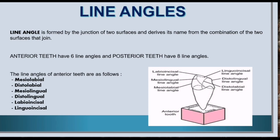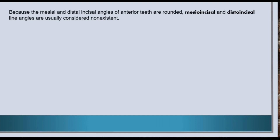The line angles of anterior teeth are: mesiolabial, distolabial, mesiolingual, distolingual, labioincisal, and linguoincisal. Because the mesial and distal incisal angles of anterior teeth are rounded, mesioincisal and distoincisal line angles are usually considered non-existent.